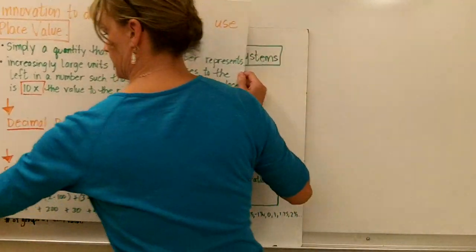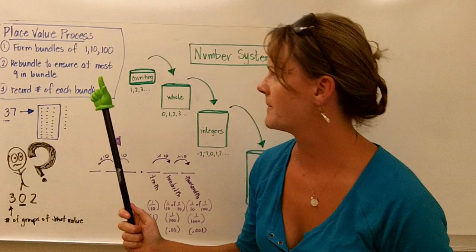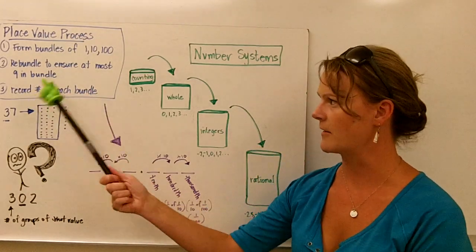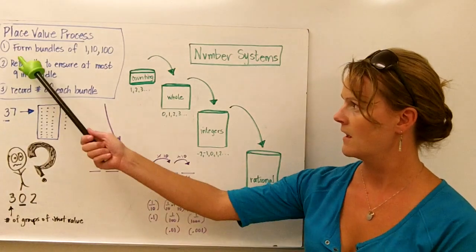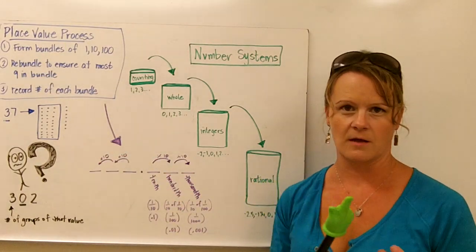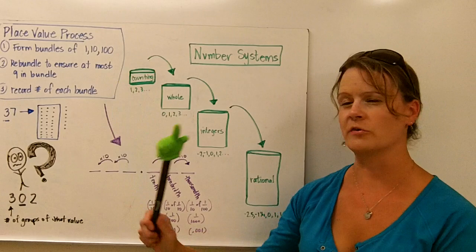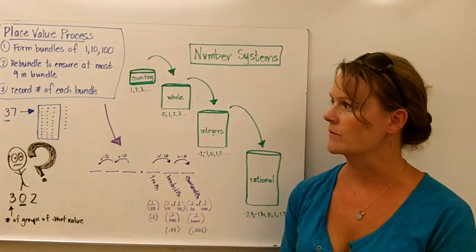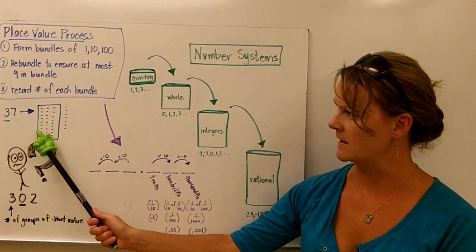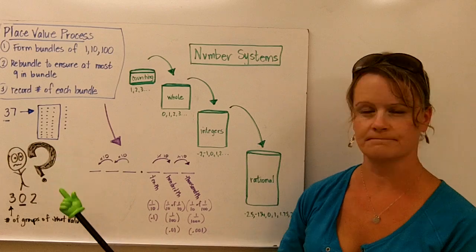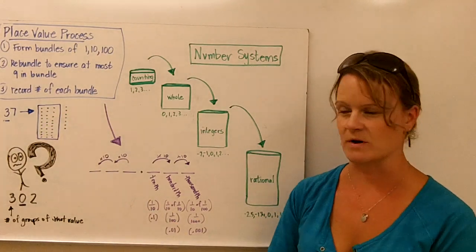Next we're going to talk about the place value process. When we talk about the place value process, we're talking really about three steps that we need to undergo to really understand the organization of the place value system. First we're going to form bundles based on that base ten system. Bundles of one, ten, and a hundred. Then we're going to re-bundle to ensure that at the most we ever have nine in a bundle. And then we're going to record the number of each bundle. As you can see here with 37, we've got three bundles of ten, ten, twenty, thirty, and then we have seven ones. We do not have enough here to re-bundle and add to our tens group.